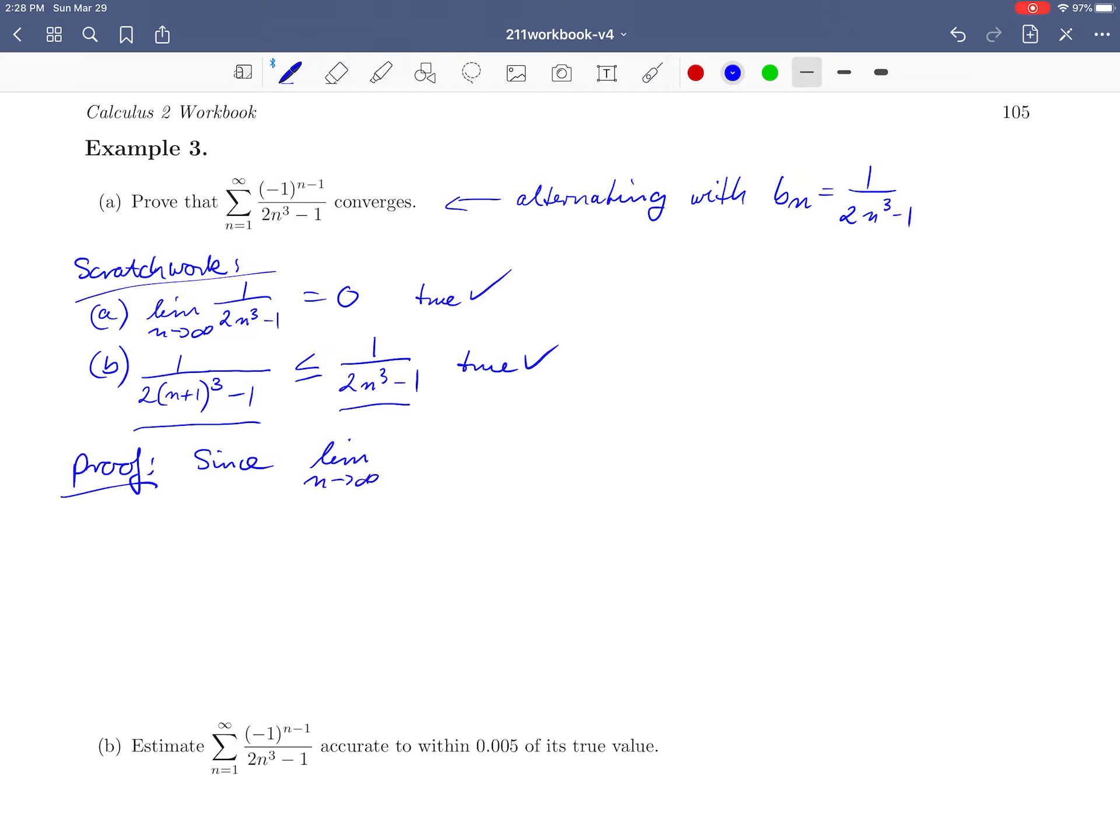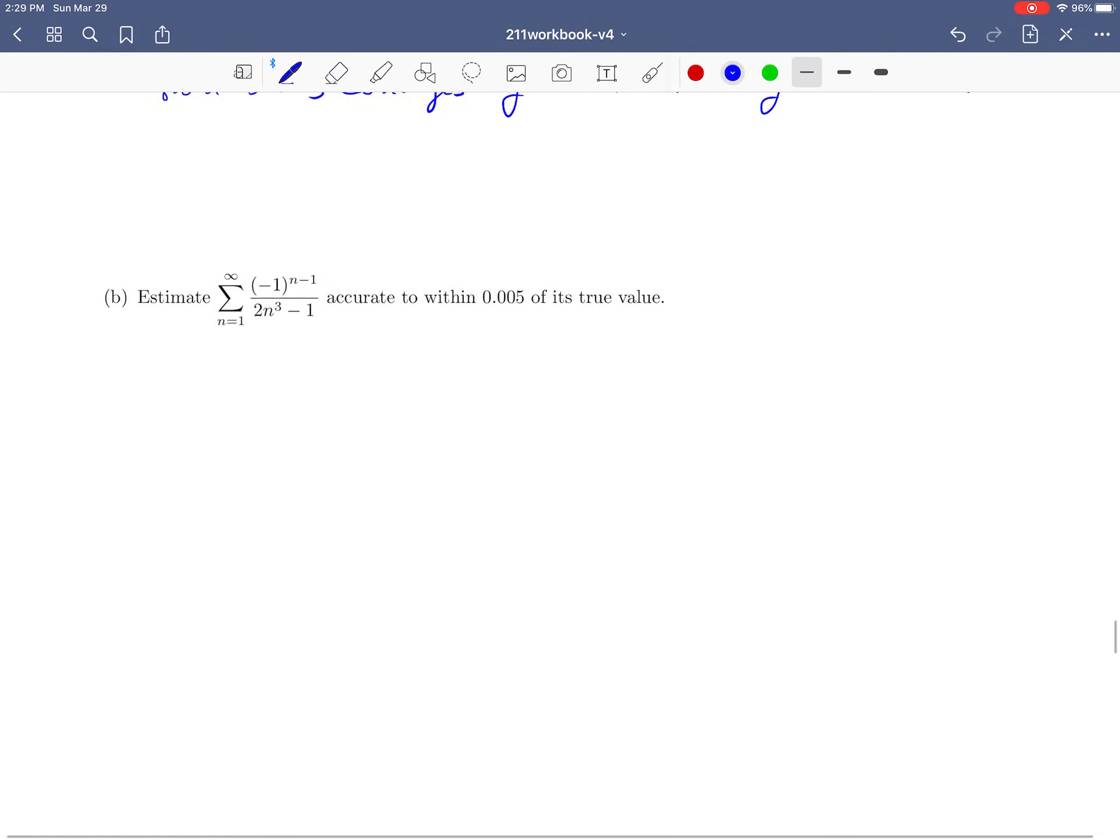All right. We are ready to write down our proof. And the wording is always the same. Since the limit as n goes to infinity of 1 over 2n cubed minus 1 is equal to 0 and 1 over 2 times n plus 1 cubed minus 1 is less than or equal to 1 over 2n cubed minus 1 for all n, the given series converges by the alternating series test. Okay, done.